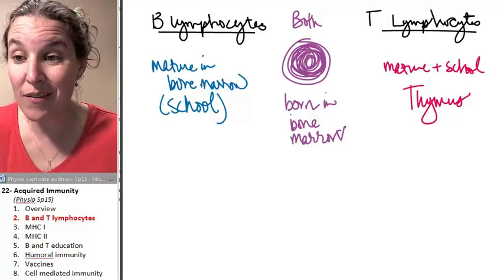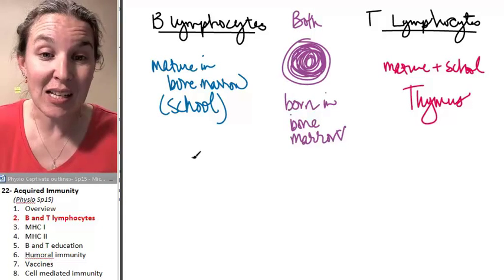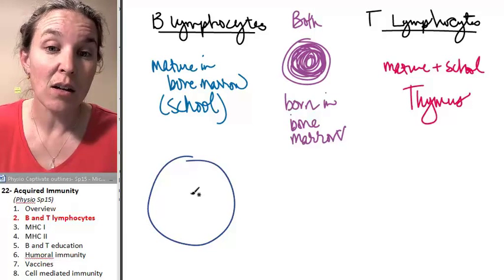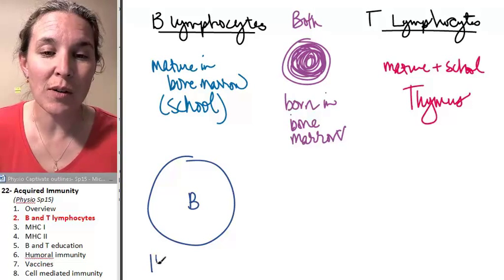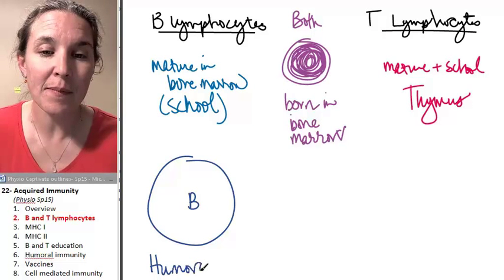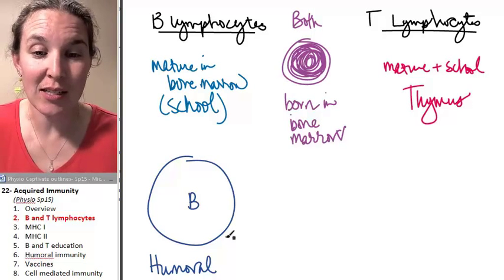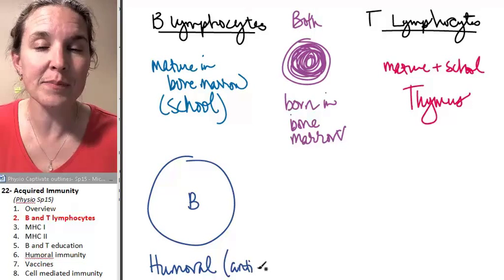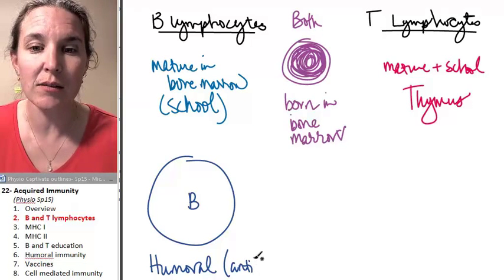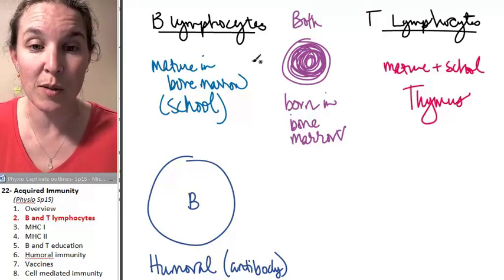So now we know where they go to school. I'm going to draw a picture of them because they have different kinds of receptors. B cells are involved in humoral immunity, and really the bottom line is antibodies. We have lots of antibody stuff going on with the humoral immune response.